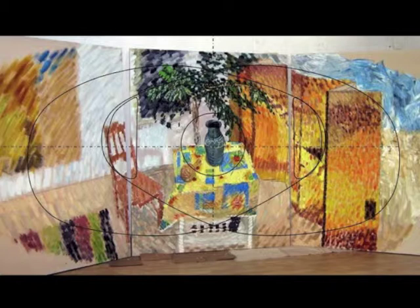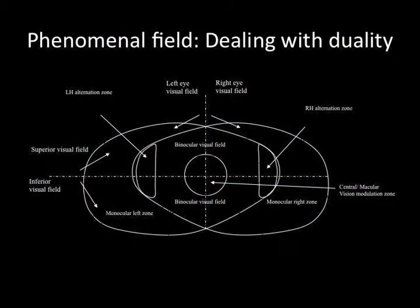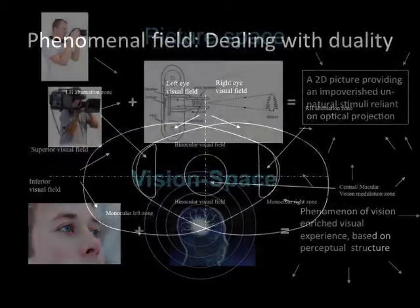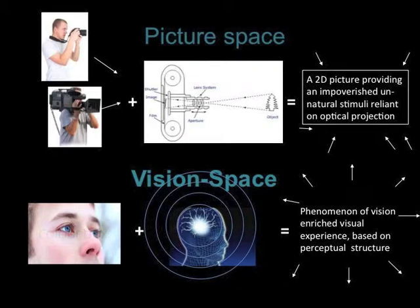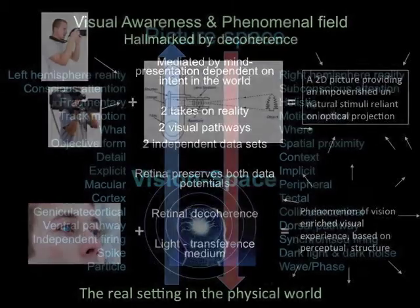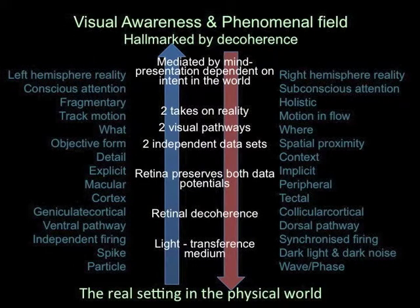Vision space is a new form of illusionary space based on perceptual structure as opposed to the structure of optics and central perspective. We generate the phenomenon of vision as biological systems, and as a result, vision is almost entirely non-photographically rendered. There's no projection going on. The fundamentals of vision space propose that entirely different data formations and processing systems are in play within the dorsal and ventral streams.